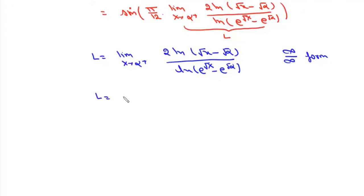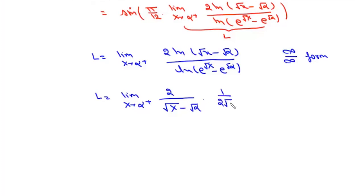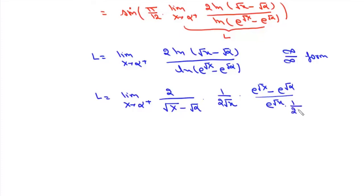Applying L'Hôpital's rule, we differentiate numerator and denominator. The numerator derivative gives 2 times 1 over (2√x), and the denominator derivative of (e^√x − e^√α) gives e^√x times 1 over (2√x). The 1 over 2√x terms cancel out.